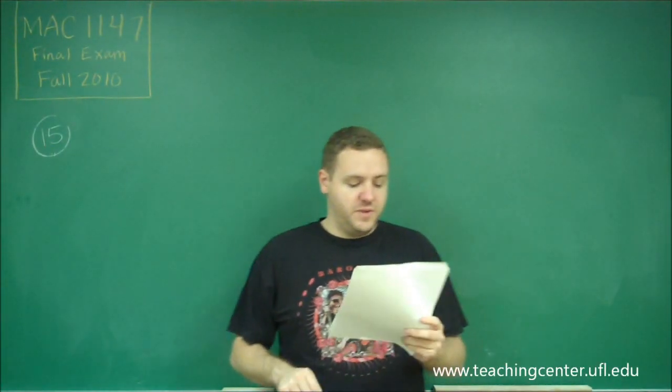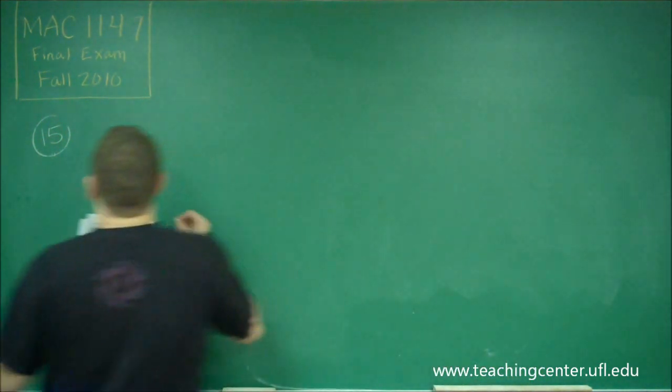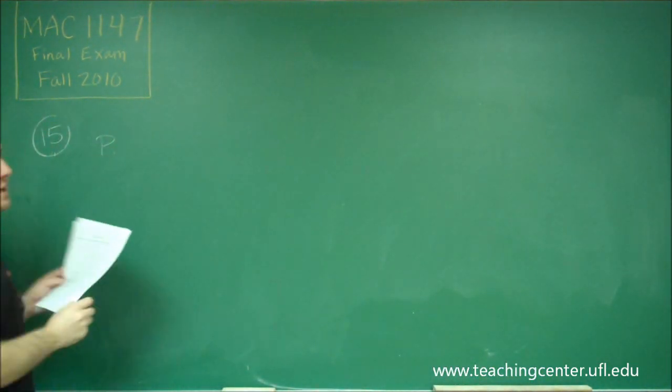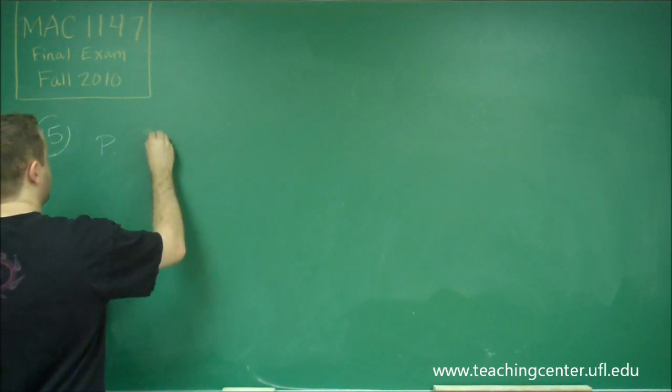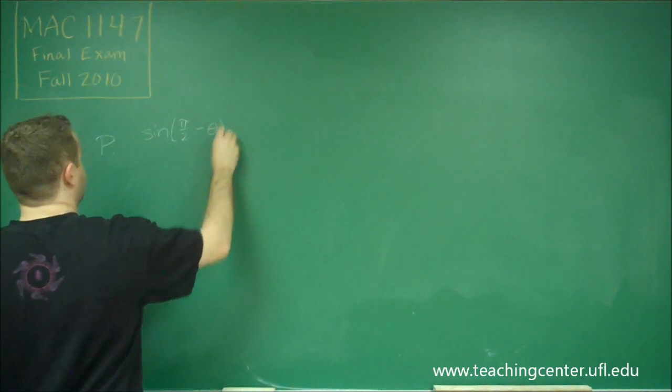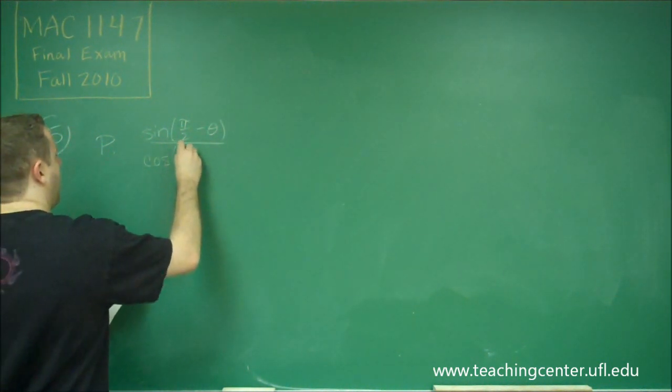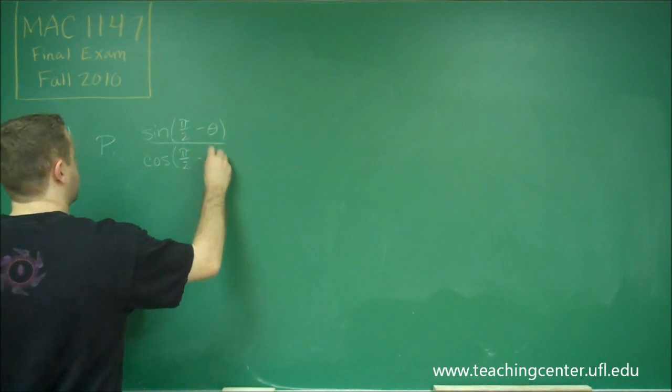So for 15, we need to figure out which of the following are equal to tangent theta. For choice P, we have sine of pi over 2 minus theta over cosine of pi over 2 minus theta.